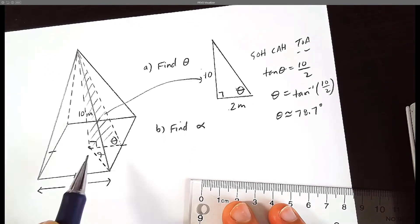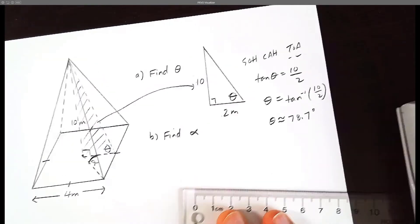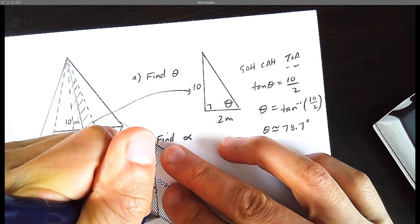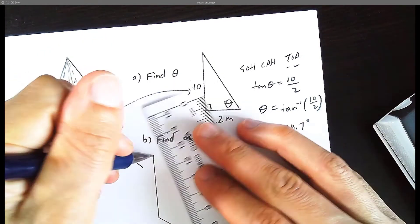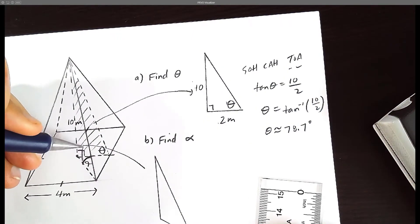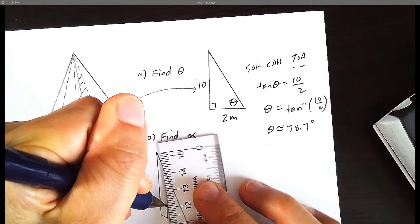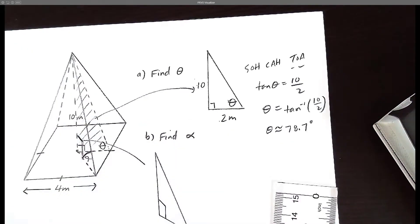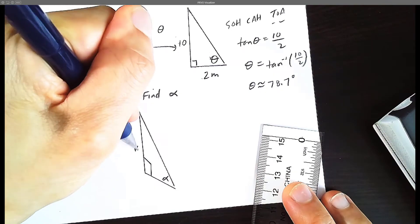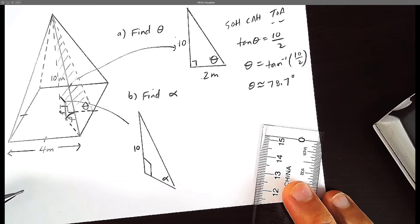Now let's focus on the second question here, alpha. Alpha here is going to be this angle over here. Let's redraw this triangle one more time. So this is a very strange problem because everything is a bit distorted in terms of perspective. But this here is also a right triangle. So this here is the right triangle. And we're trying to solve for alpha. And we know that this perpendicular height of the pyramid is 10. And what else do we know?